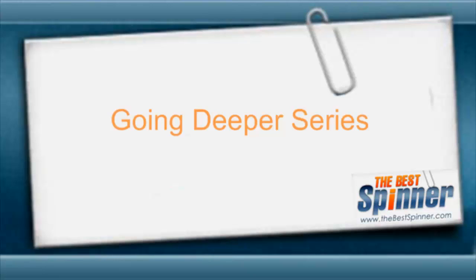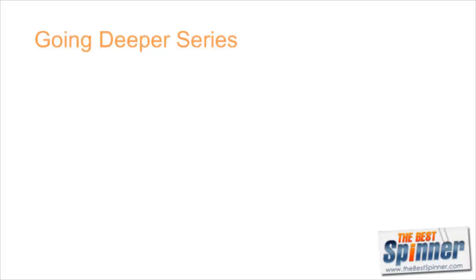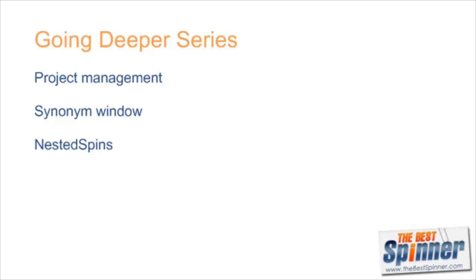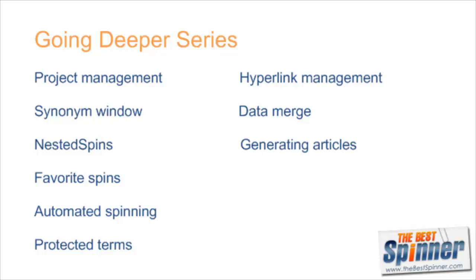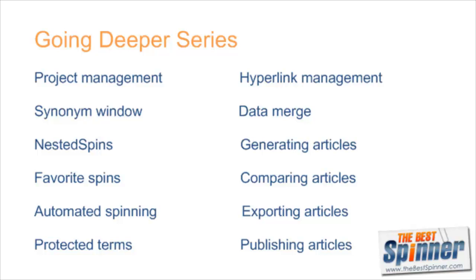This is the first of a 12-part video series that goes even deeper into the world of the Best Spinner. In this series, I will cover creating and managing projects, understanding all the features of the most important window in the software, creating multi-level spins to increase article uniqueness, creating favorite spin tags, spinning your content automatically, protecting specific terms like brand names and trademarks from being spun, creating and managing hyperlinks, data merging, generating large numbers of articles for publication, comparing articles to verify uniqueness, outputting articles in various spin tag formats, and posting articles to your blog and the Best Spinner's very own article directory.